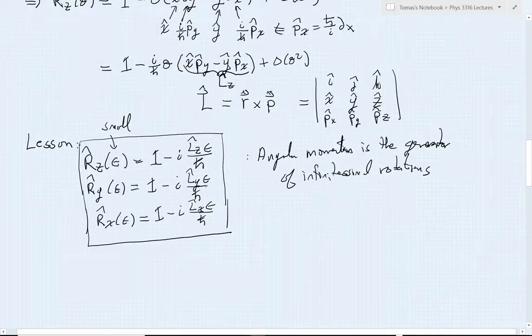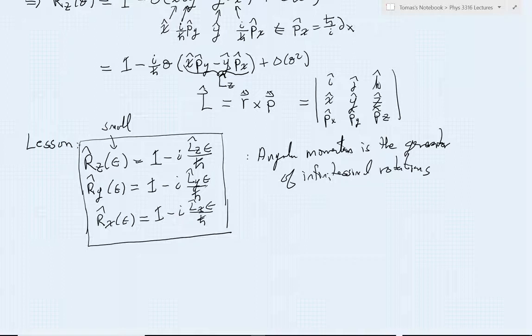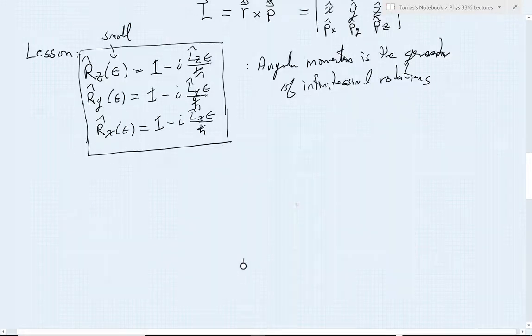Now we had also made mention about the possibility of looking at things in spherical coordinates. And there's a very nice relationship between this z rotation, this angular momentum in the z direction, and in fact spherical coordinates.